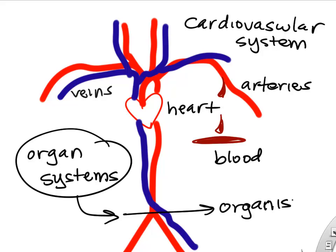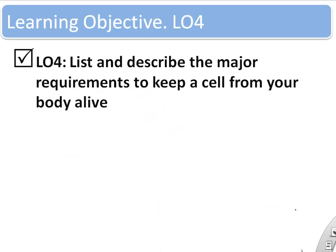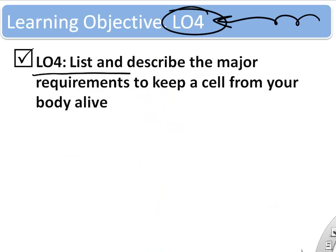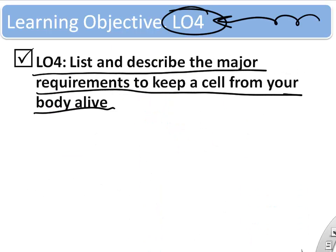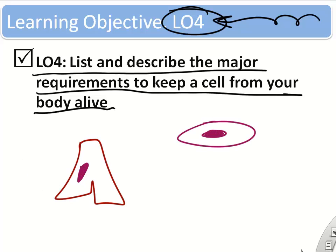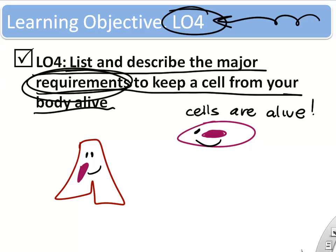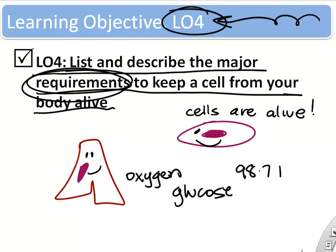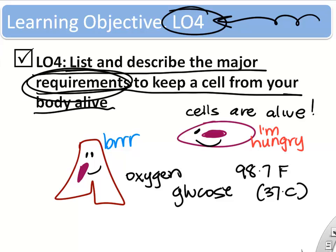If you take the organ systems, you can build an organism — in this case, a human. Next: list and describe the major requirements to keep a cell from your body alive. We can actually take cells out of your body and keep them alive. Cells are the smallest living unit in your body and they're pretty high maintenance — the body has to do a lot of things to keep them alive.